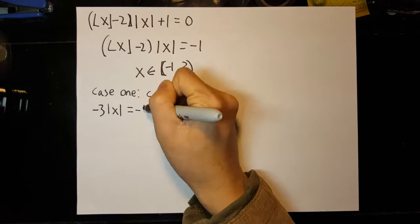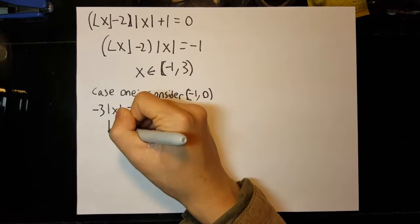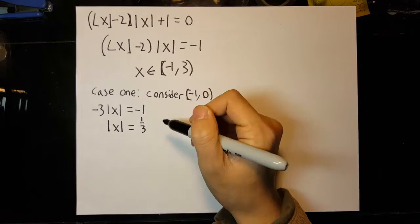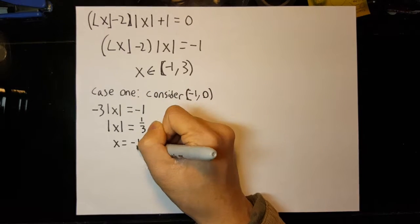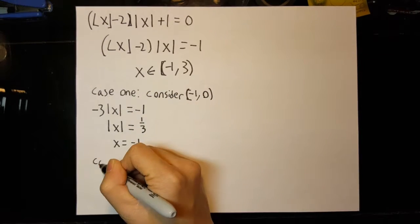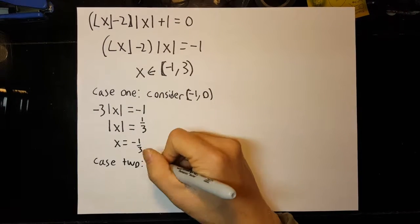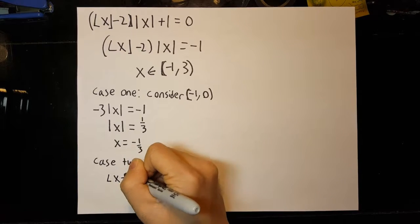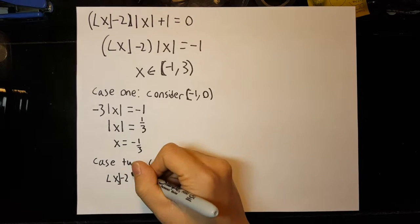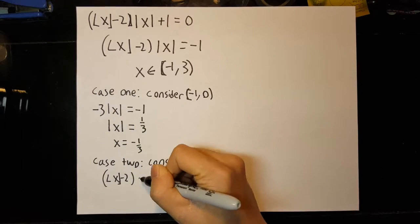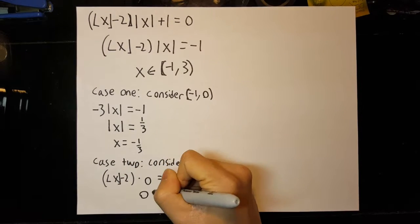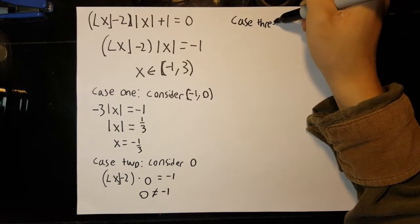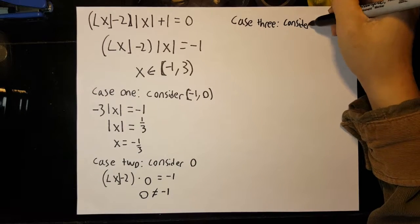Knowing this, we can split the problem into several cases. When x is between negative one and zero, the floor of x will simply equal negative one. Simplifying, we get that the absolute value of x equals one-third, so x equals negative one-third. When x equals zero, we find that zero equals negative one, meaning that zero is not a solution.